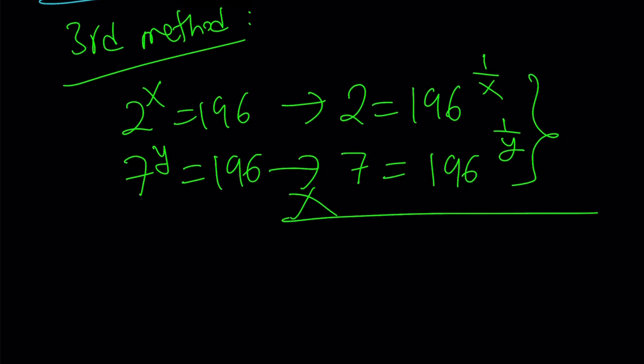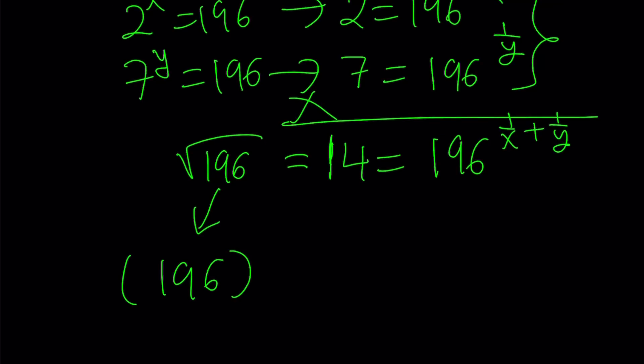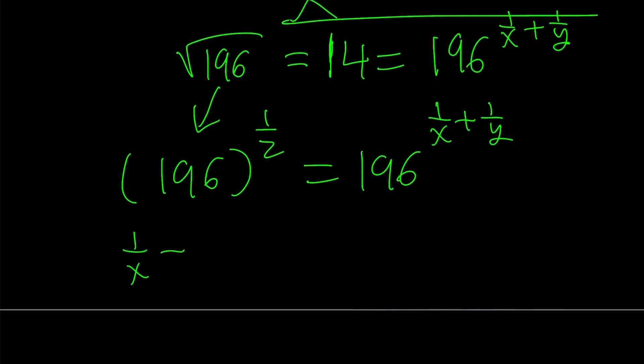What is 2 times 7? Come on, everybody knows that. It's 14, right? And we get 196 to the power 1 over x plus 1 over y. But 14 is the square root of 196, which can be written as 196 to the power 1 half. But that is equal to 196 to the power 1 over x plus 1 over y. What is that supposed to mean? It means 1 over x plus 1 over y is equal to 1 half. Isn't that beautiful?